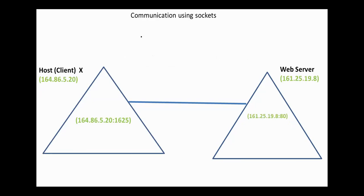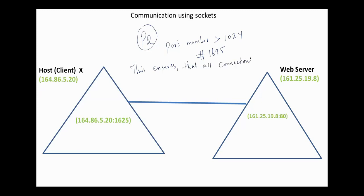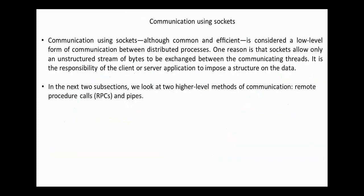All connections must be unique. If another process, for example B2 on host X, wishes to establish another connection with the same server, it would be assigned a port number greater than 1024, but not equal to 1625. This ensures that all connections consist of a unique pair of sockets. Communication using sockets, although common and efficient, is considered a low-level form of communication between distributed processes. One reason is that sockets allow only an unstructured stream of bytes to be exchanged between the communicating processes. It is the responsibility of the client or server application to impose a structure on the data.